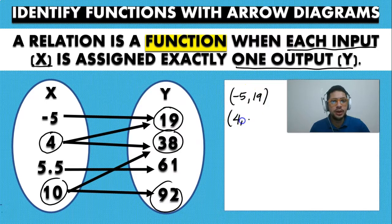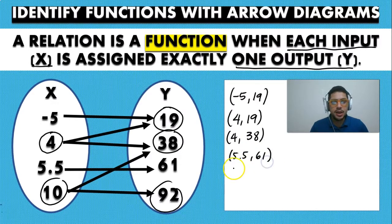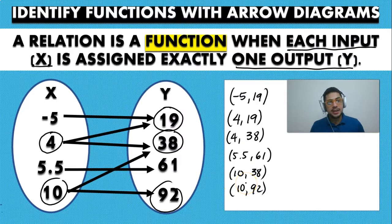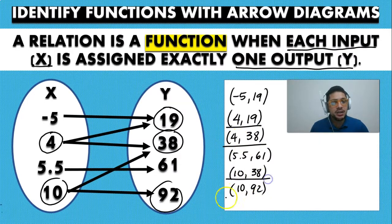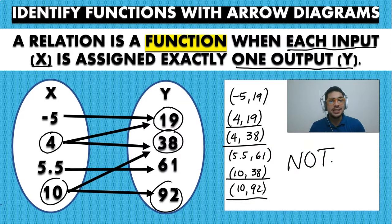So we see that the X values are repeating: four maps to both nineteen and thirty-eight, and ten maps to both thirty-eight and ninety-two. Since four has two values of Y and ten also has two values of Y, this one is not a function — it is just a relation but not a function.